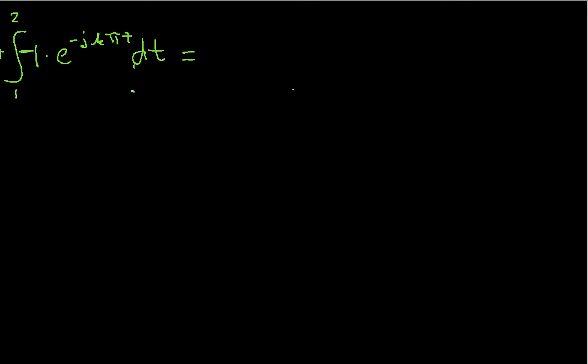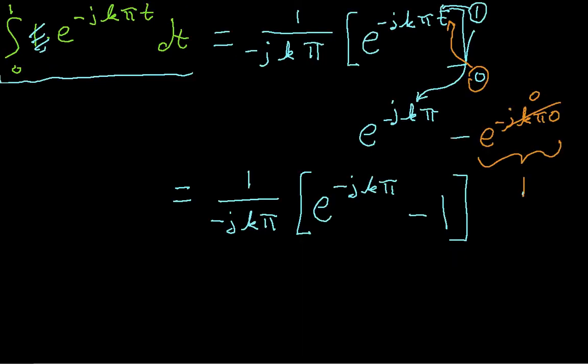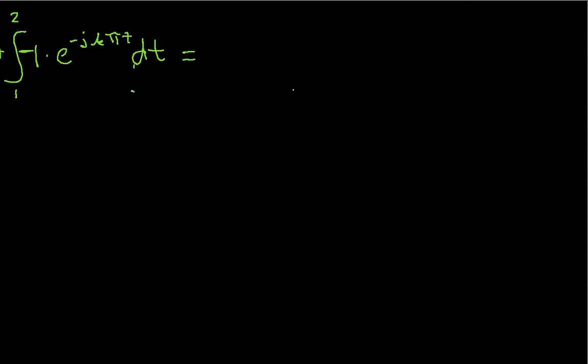So we have to work this integral, and it turns out that I forgot the negative 1 that goes here. Let's go back to our original graphic and change this to be negative 1, because between 1 and 2, x(t) is indeed negative 1. So this is going to be equal to 1 over -jkπ times minus e^(-jkπt) evaluated at 1 and 2.